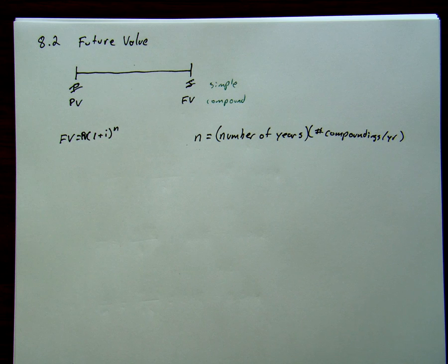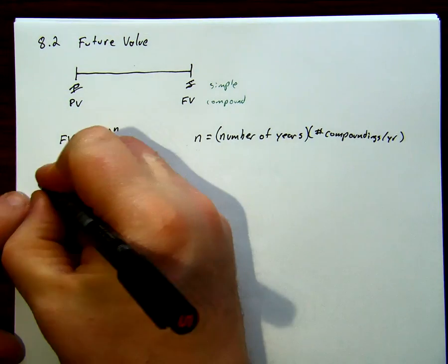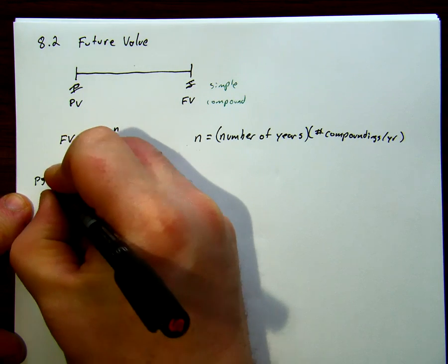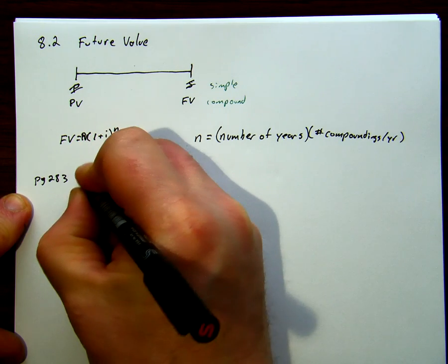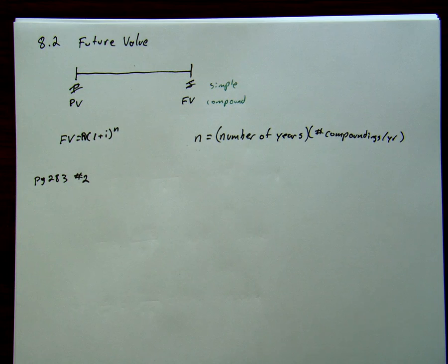We'll just get straight into a problem to do the example. We have a problem that says, what is the future value, so we'll do question two, page 283, number two. It says, what is the future value of $8,500 after five and a half years if it earns 9.5% compounded quarterly?